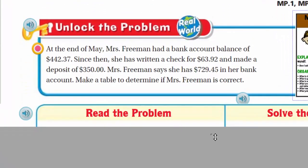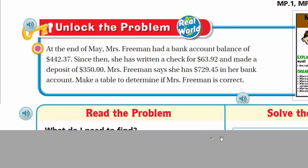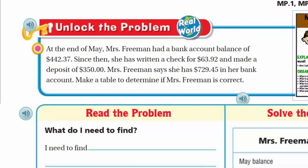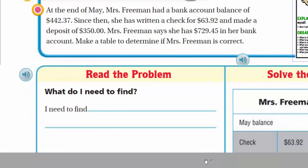So let's shrink this down again and let's unlock this problem. Unlock, give me the key. There it is. Now it says here, at the end of May, Mrs. Freeman had a bank account balance of $442.37. Since then, she has written a check for $63.92 and made a deposit of $350. Mrs. Freeman says she has $729.45 in her bank account. Make a table to determine if Mrs. Freeman is correct. That's what I say.